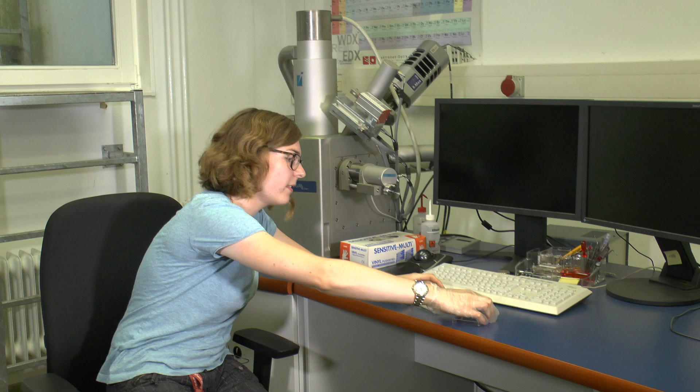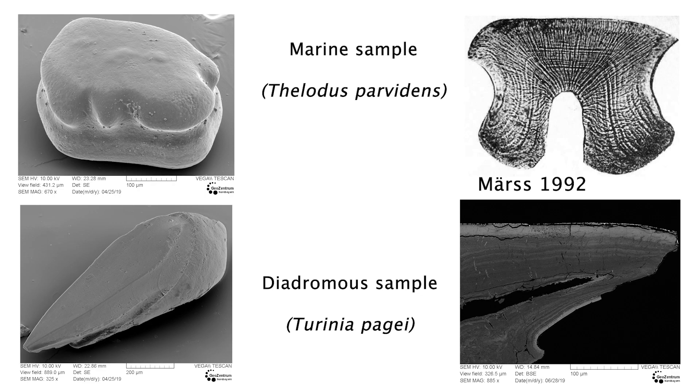For this purpose, I prepared vertical sections through these scales to have a look at their internal structure, which shows growth layers. These layers preserve a record of thelodont growth comparable to tree rings and store important information about the entire life history of the individual organism.